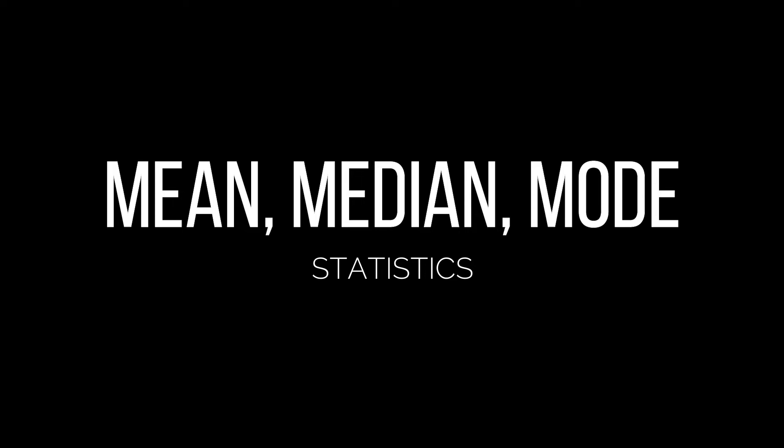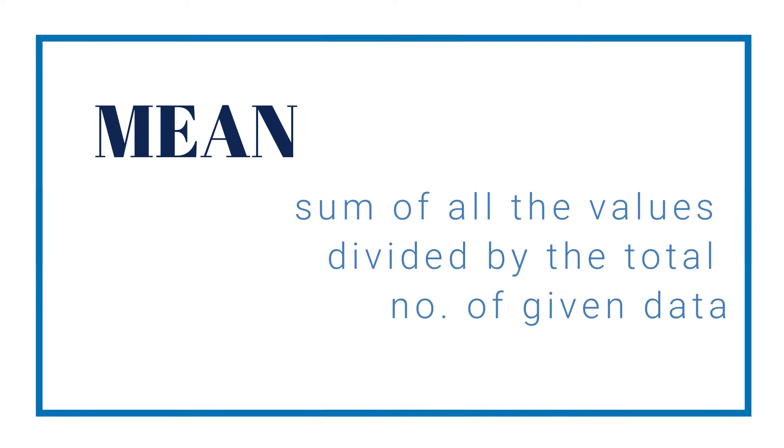In statistics, the three main measures of central tendency are the mean, median, and mode. The mean is the sum of the value in a data set divided by the total number of given values. It is also known as the arithmetic average.